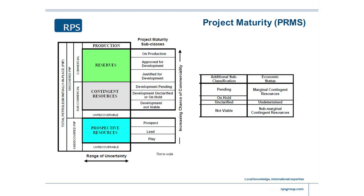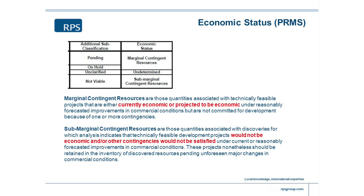There's another category called economic status that's rarely used — people seem to only use the main green, grey, and blue definitions. The PRMS talks about marginal contingent resources — those are technically feasible projects that can currently be demonstrated to be economic or projected to be economic — and sub-marginal ones that are not economic. Personally, I think the word marginal doesn't imply economic at all; it's a bad use of English. I'd rather call them economic contingent resources and non-economic contingent resources.